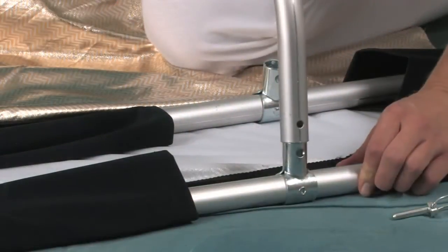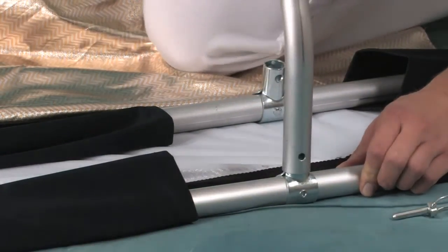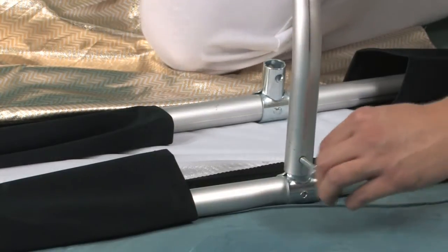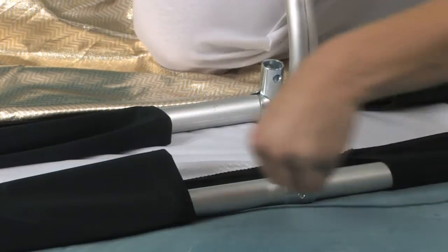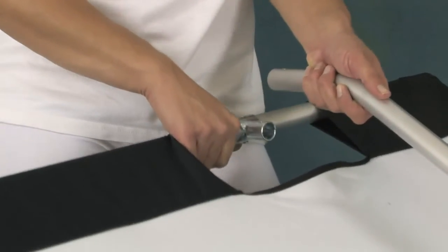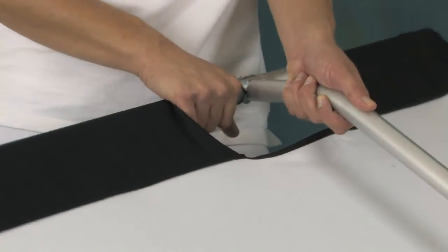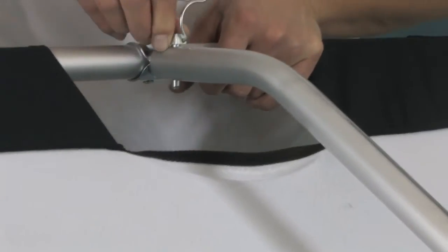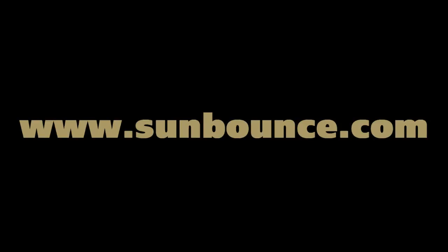Next, insert the crossbar in the T-connector. Hold each crossbar firmly and pull the long pole towards yourself. Insert the crossbar in the second T-connector. The reflector is ready to go.